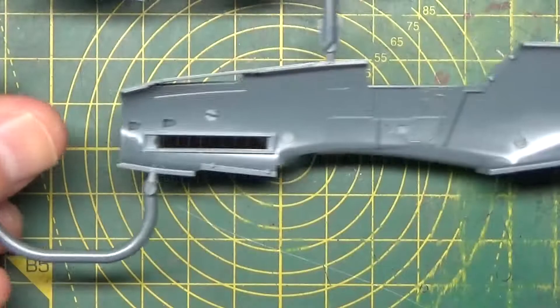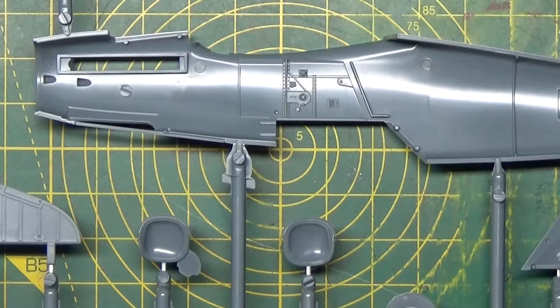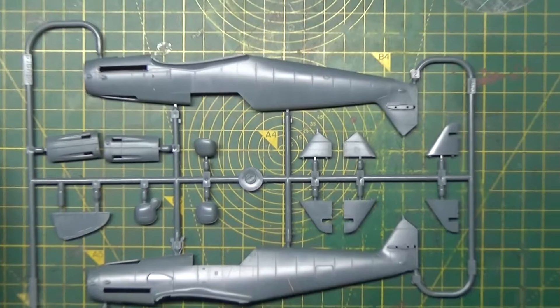And again on the other side of the body, plenty of rivet detail. And of course, on the inside of these pieces, we have a little bit of cockpit detail. Same on the other side—a few wires and bits and pieces, levers and stuff like that. So that is that part.